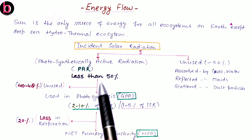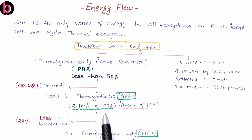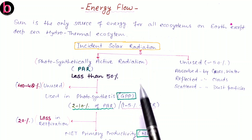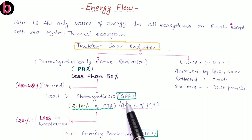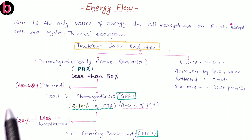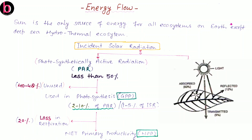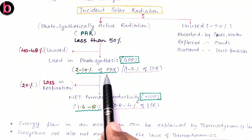Of this less than 50 percent PAR, how much is actually consumed by plants for productivity? It is nearly 2 to 10 percent of total PAR, which is also approximately 1 to 5 percent of total incident solar radiation. This amount of PAR is used by plants for photosynthesis and is known as GPP — gross primary productivity. The remaining 40 to 48 percent of PAR is unused, because when light falls on a leaf, some is transmitted through the leaf and some is scattered from its surface.